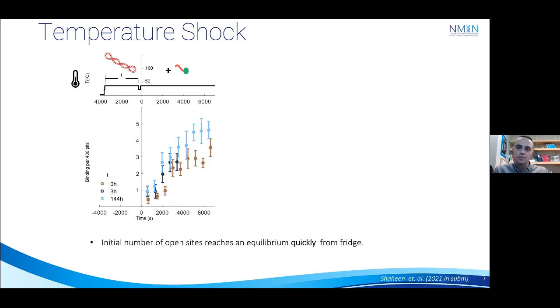So as you can see for the molecules out of the fridge, the binding doesn't change significantly over the course of 144 hours. This tells us that the molecules reach equilibrium quite quickly coming out of the fridge.